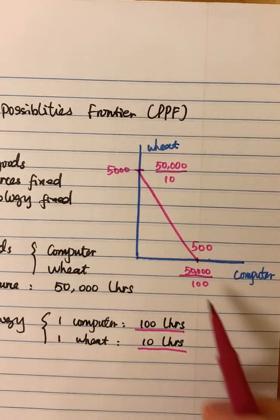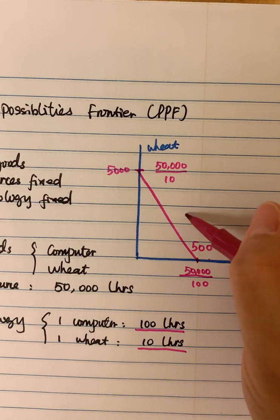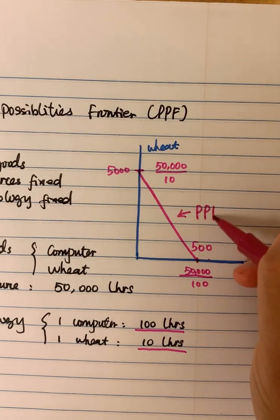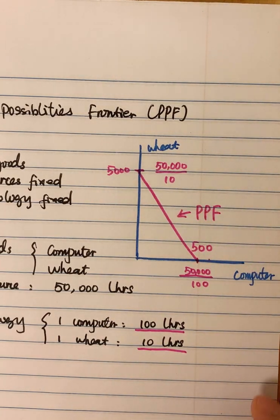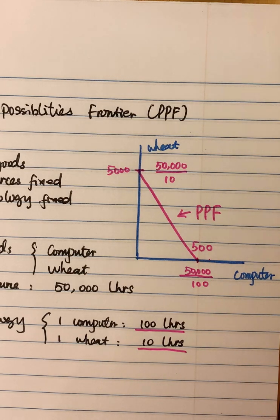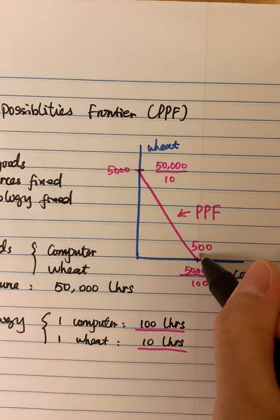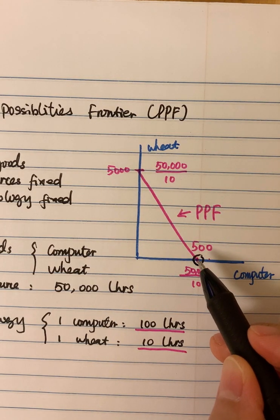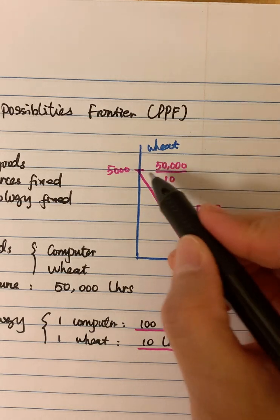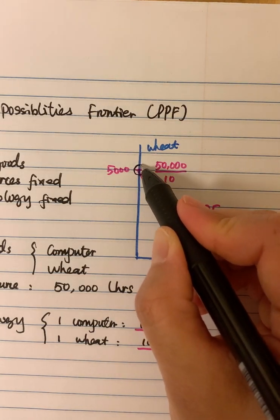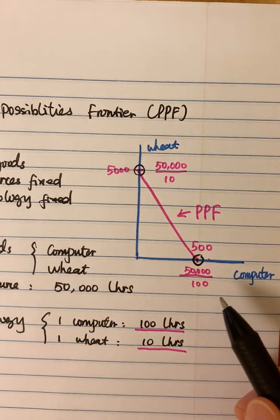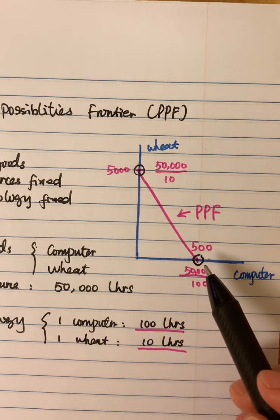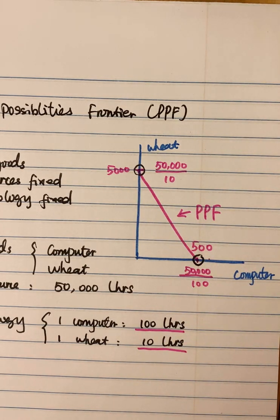So this curve or this straight line here will represent the PPF. So this is how we can draw the PPF quickly based on the given information. What you need to do is find out the point where we can have the maximum amount of computers being produced by the economy, and another point will be the maximum amount of wheat that the economy can produce. Then link these two dots, we can have our PPF.